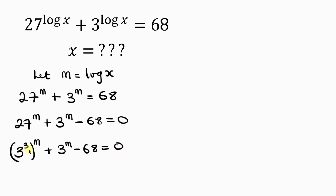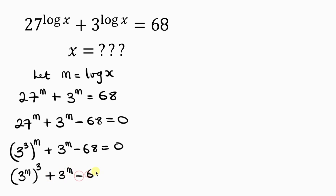Now there is something we can do here. I want what is here to resemble 3 to the power of m, so I can do that by switching the position of the powers. This becomes 3 to the power of m, raised to the power of 3. This is valid because of indices — the powers are multiplying. So plus 3 to the power of m minus 68 equal to 0.